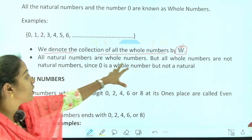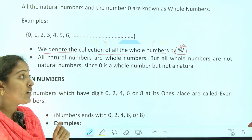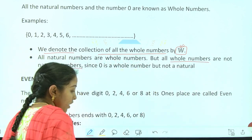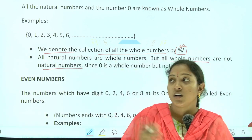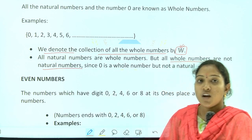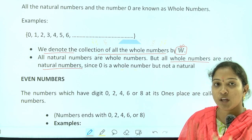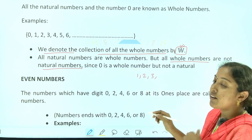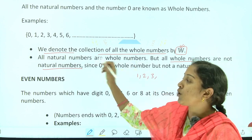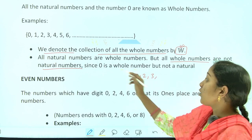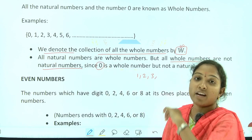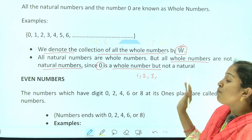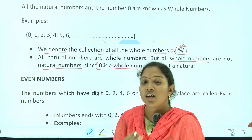All natural numbers are whole numbers but all whole numbers are not natural numbers. You have to keep focus on this. All natural numbers can be whole numbers because 1, 2, 3, 4, 5, 6 and up to infinity can be included in the set of whole numbers, but 0 will not come in the natural number set. That's why all whole numbers cannot be natural numbers.